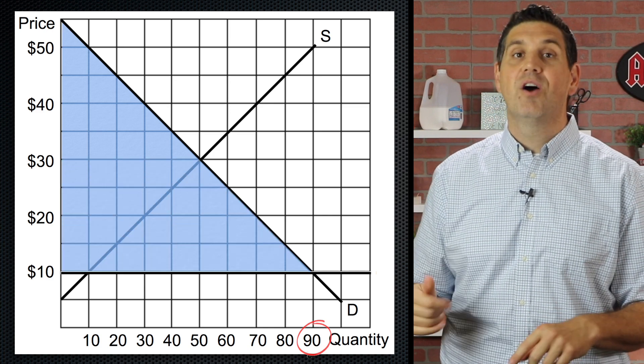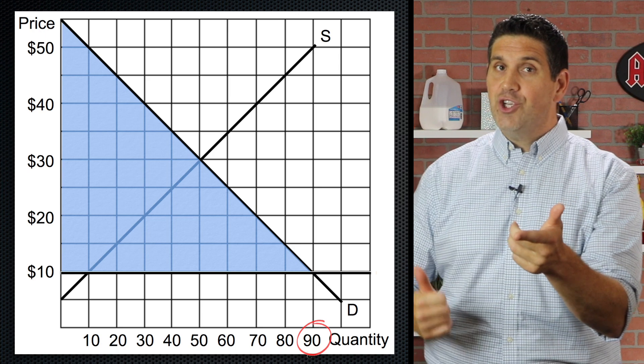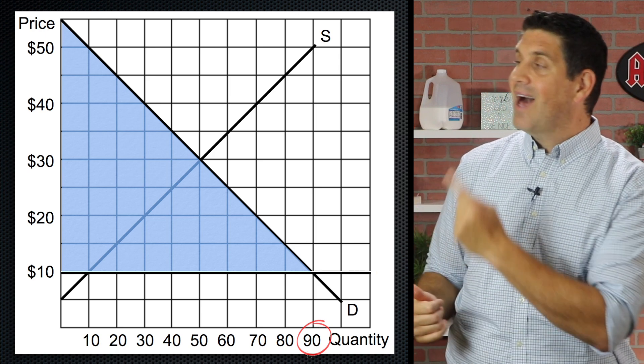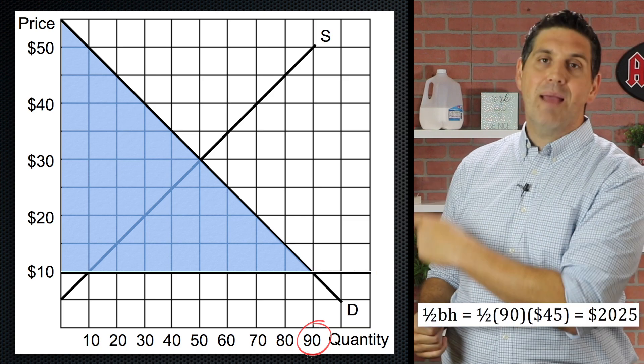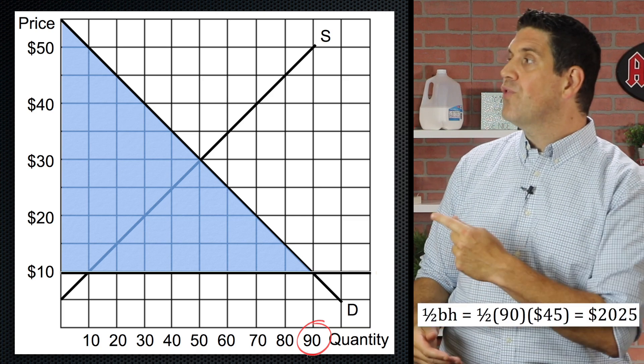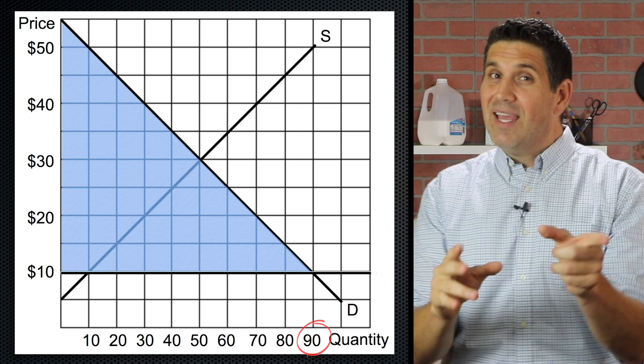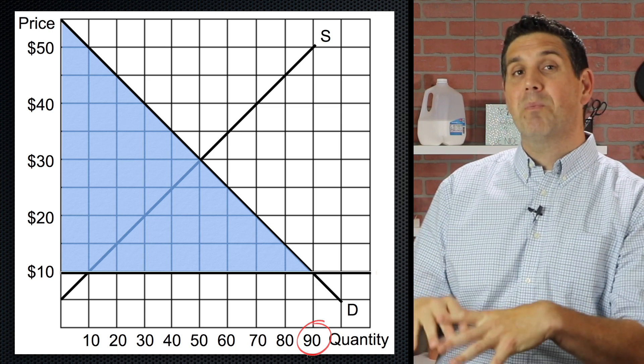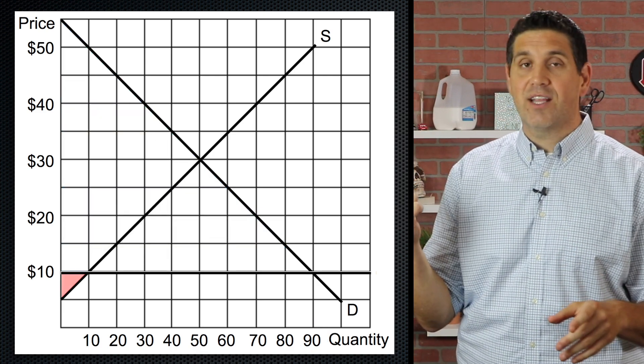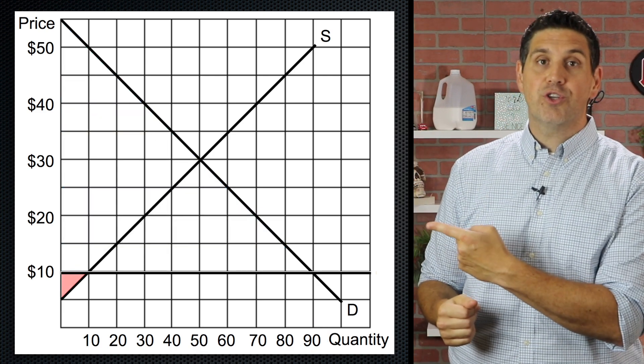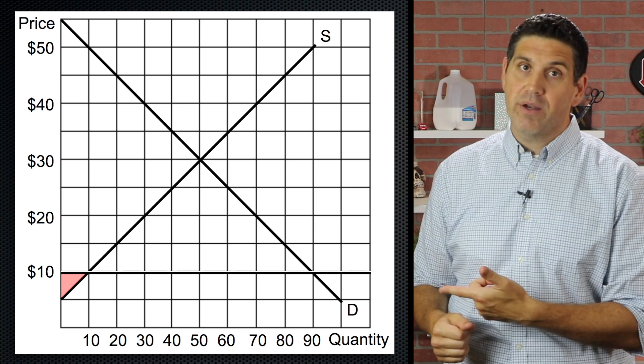It's going to be this whole area right here. The actual calculation, it's the base, which is 90 times the height, which is 55 minus 10. So 45 times 90 cut in half gives you 2025. But the big idea here is to understand that consumer surplus got bigger. This shows the benefits of trade. And it also shows you who doesn't like trade, domestic producers, because producer surplus got smaller.